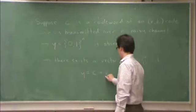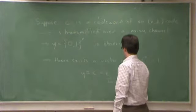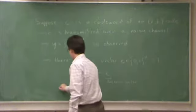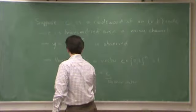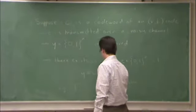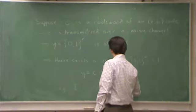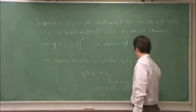So in other words, e contains the errors. This is the error vector. So for example, let's make c the all zero code word from our single parity check.